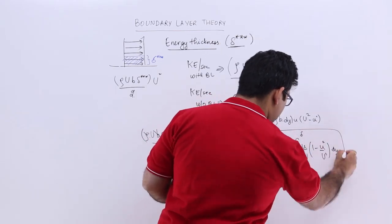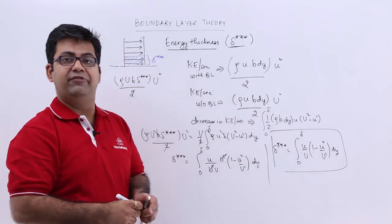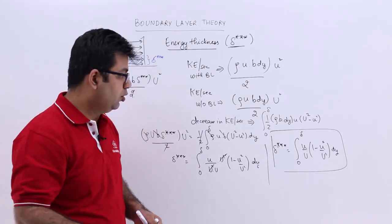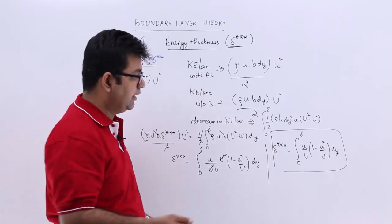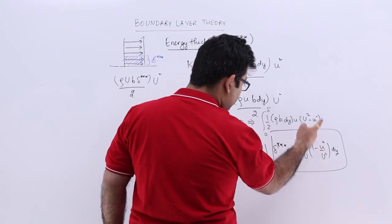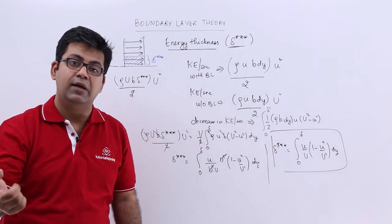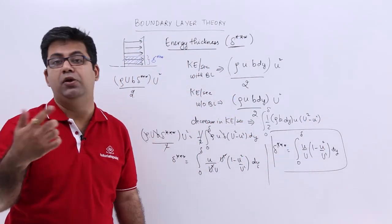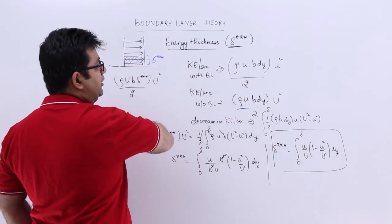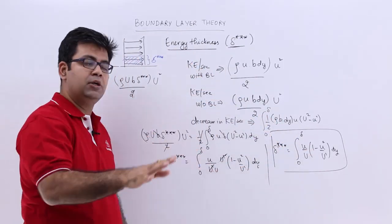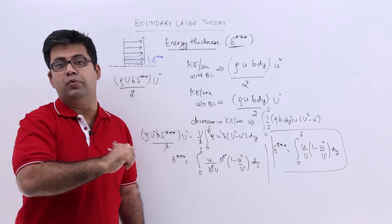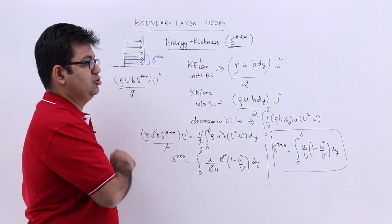This is almost similar to what we found for the displacement thickness and the momentum thickness. The only difference from the momentum thickness is that here you have small u squared upon capital U squared instead of small u upon capital U. Now we have completed all three thicknesses for boundary layer flow, and we will move on to some numerical problems on this topic.